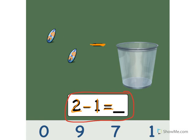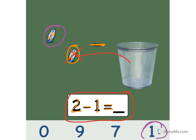Let's count how many objects we have. We have 1, 2. We're going to minus or take away 1. Let's count out 1 to take away. 1. We're going to take 1 and throw it in the trash. So what do we have left? We have 1 left. Point to the number 1. Good job. 2 minus 1 equals 1. Good job.